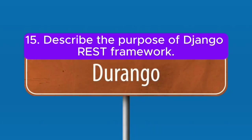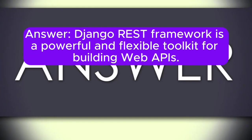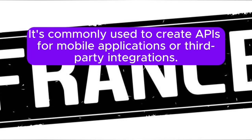Question 15: Describe the purpose of Django REST framework. Answer: Django REST framework is a powerful and flexible toolkit for building web APIs. It's commonly used to create APIs for mobile applications or third-party integrations.